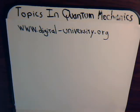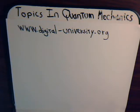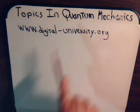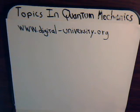This is video number 20 in our course on quantum mechanics. In this video we're going to discuss the time evolution of an operator. And just a reminder, the playlist for all of the videos in this series is at the website digital-university.org.